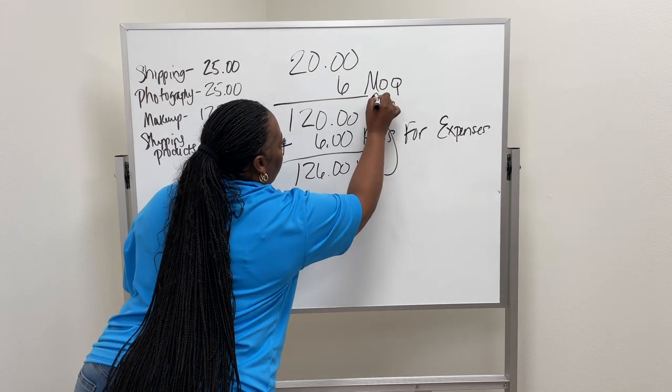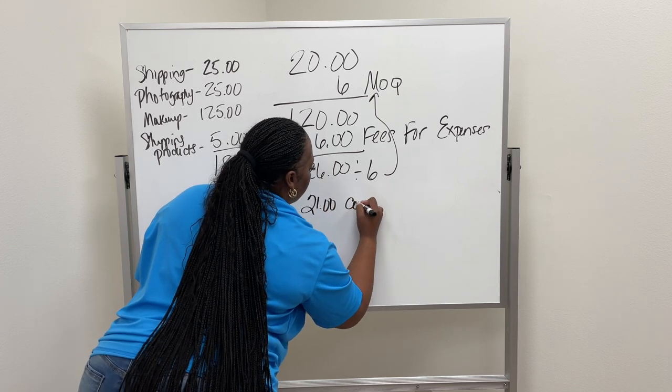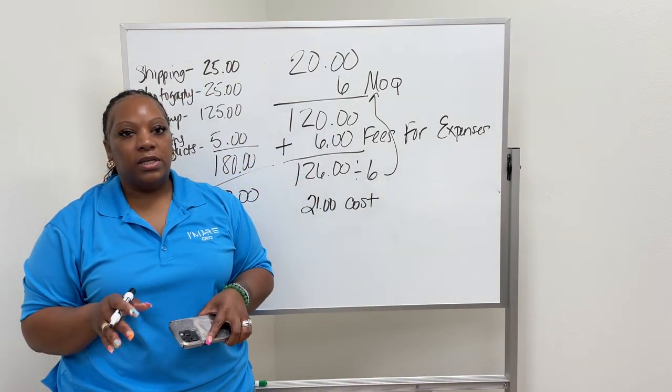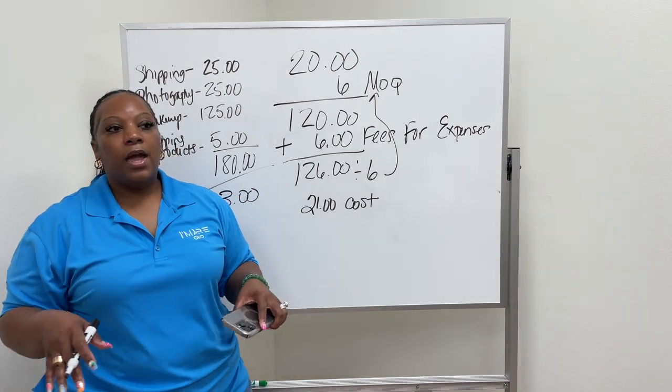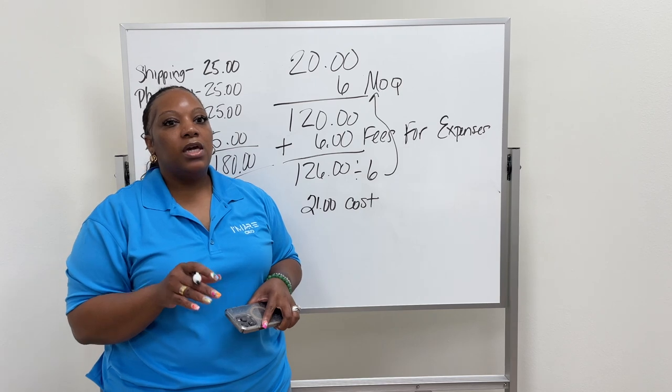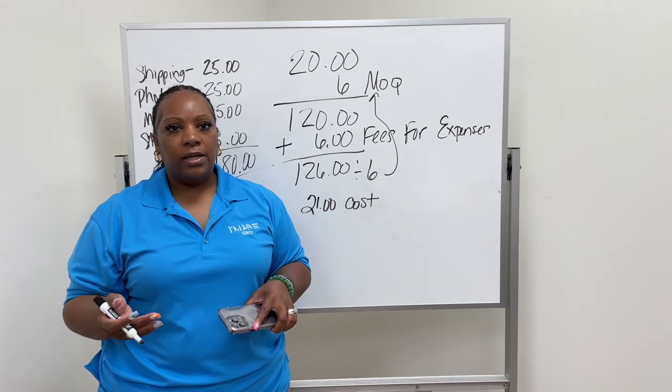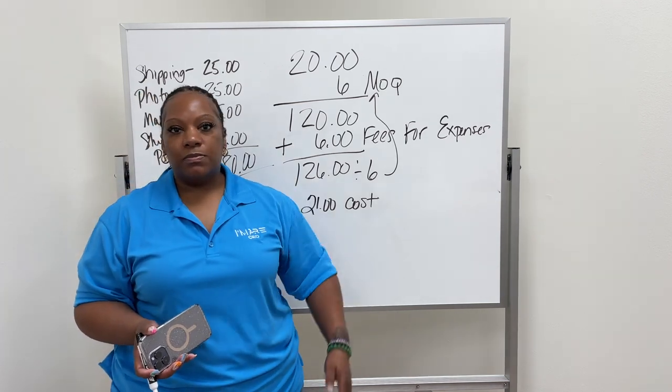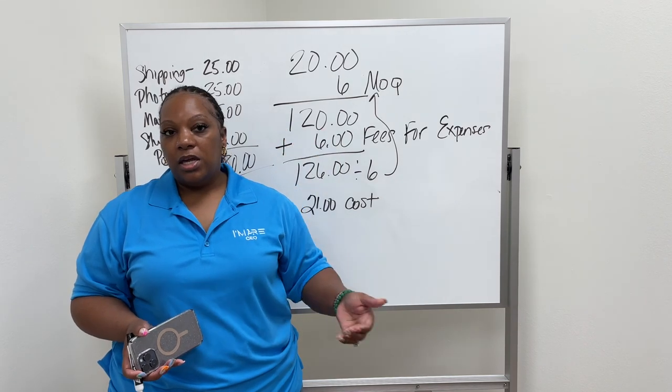You divide this by six because it's the MOQ and it comes out to $21, which is your cost. Now some people say that when you're costing you should do it double, you should do it triple, you should do it quadruple. But most people like to do double. I don't agree with that. I think that when you price the item it should be at least 2.5 if you're just starting. If you've been in business like a year, you're trying to find out who your customer is, you're still gaining customers, then you should do 2.5.